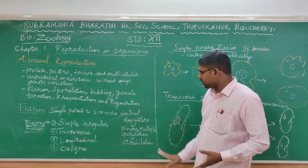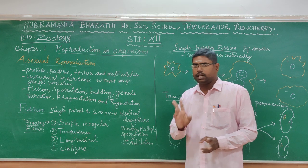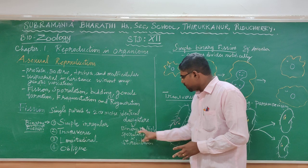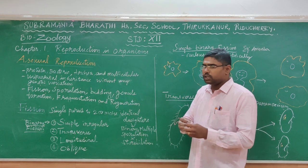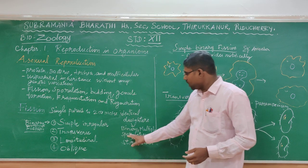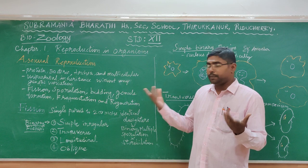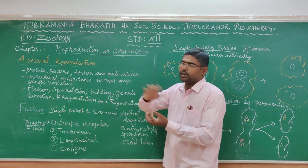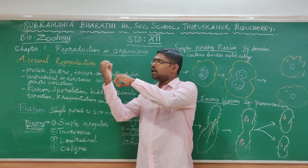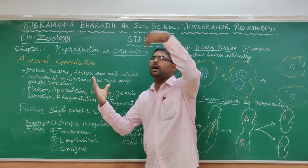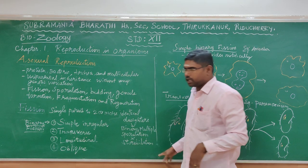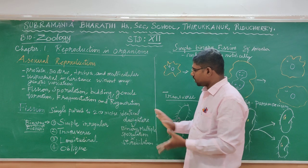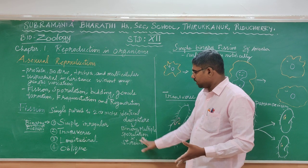We have different types in Fission. One is Binary Fission. The second is Multiple Fission. The third is Sporulation, where many spores are produced. The next is Strobilation — a transverse type of fission. In fission, a single parent gives rise to identical daughter individuals — that is why we call it binary or multiple fission.